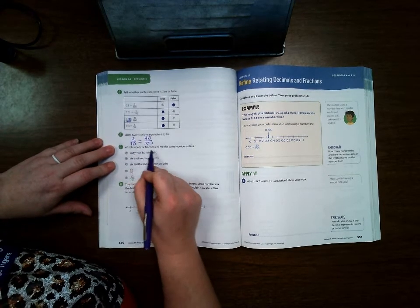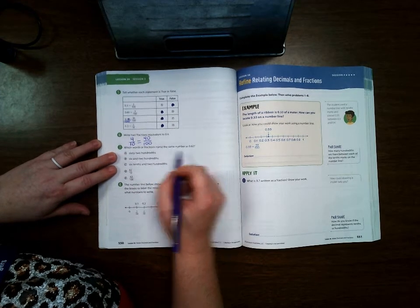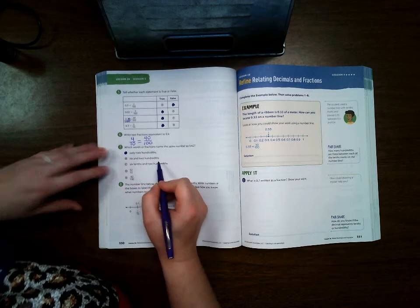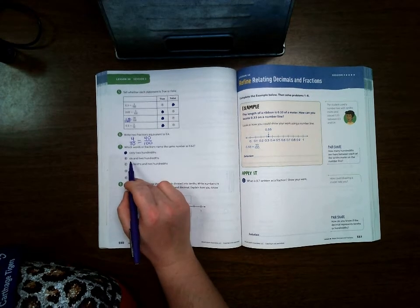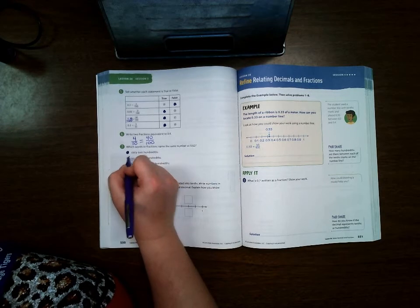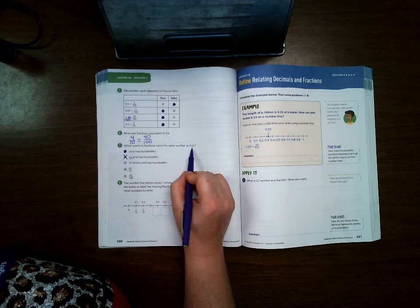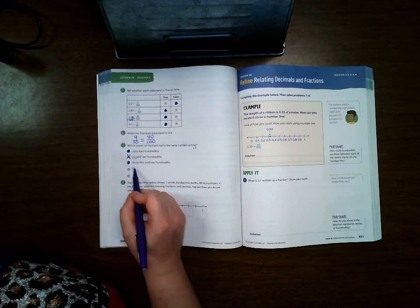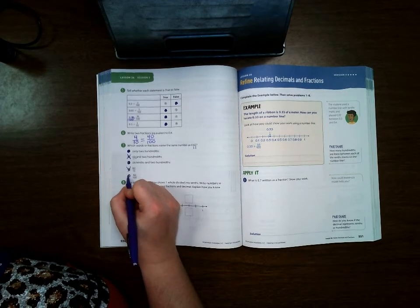Which words or fractions name the same number as sixty-two hundredths? Well, that one says 62/100. Six and two hundredths? No, because that would be six whole numbers and two hundredths, so that's not correct. Six tenths and two hundredths? Yes, there is. Sixty-two tenths? No. Sixty-two hundredths? Yes.